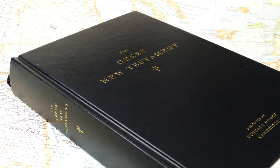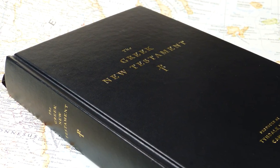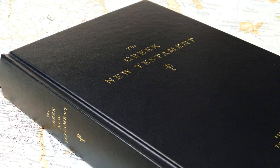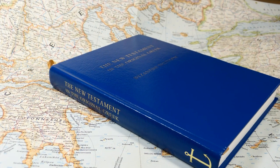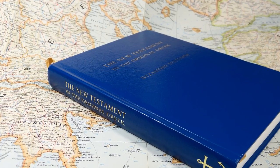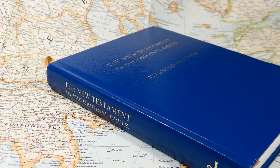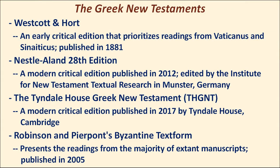The Tyndale House Greek New Testament is a new critical edition published in 2017 by Tyndale House, done by evangelical scholars. The Nestle-Aland is done by scholars in Germany who may or may not be believers, but the Tyndale House is done by believers, as was Robinson-Pierpont's Byzantine text form, which presents the readings from the majority of extant manuscripts — most of them relatively late — published in 2005.